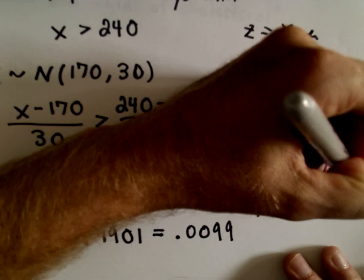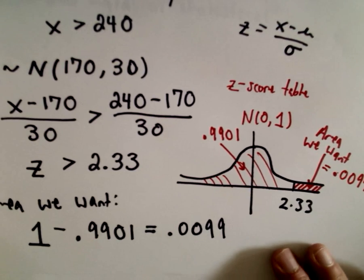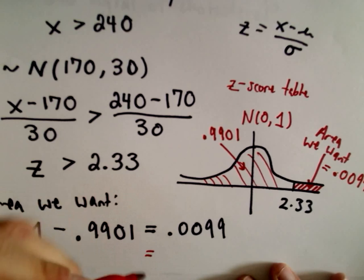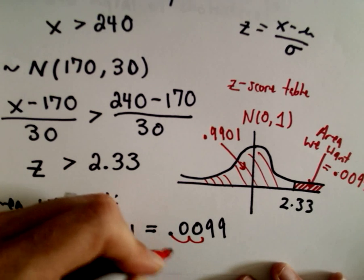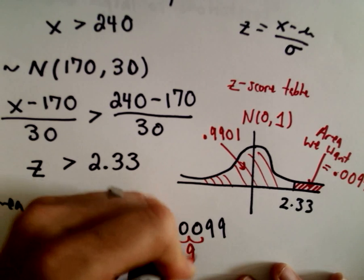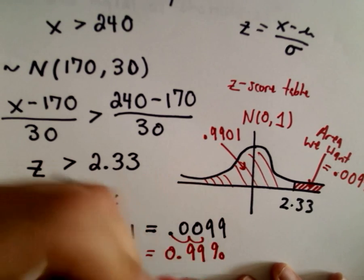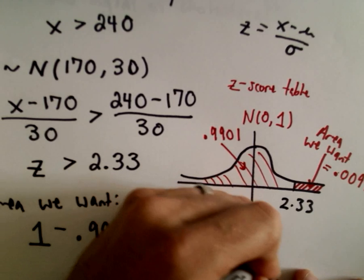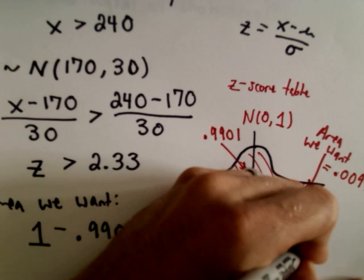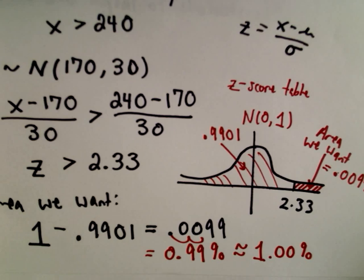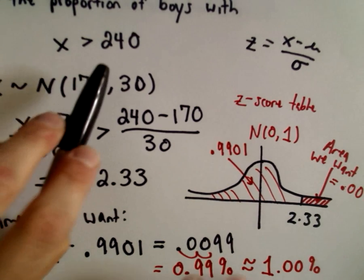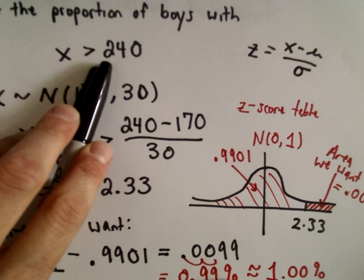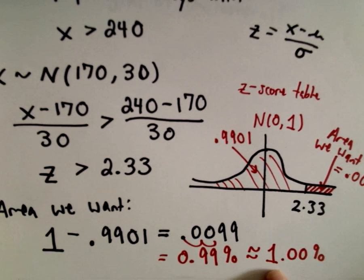The area we want to the right of this z-score of 2.33, that's equal to 0.0099. If we convert that into a percentage, that's going to be 0.99%, which is roughly equal to 1%. So the proportion of boys that have a high cholesterol level of greater than 240, that's going to be roughly about 1% of the population.